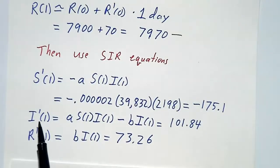And I prime tomorrow is a times S tomorrow times I tomorrow minus b times I tomorrow. That's 101.84. R prime tomorrow is b times I tomorrow, 73.76. Great. So we've got today and tomorrow.